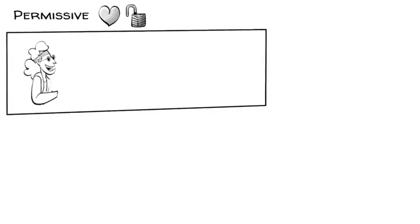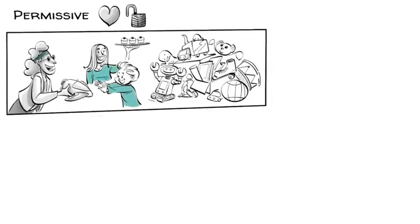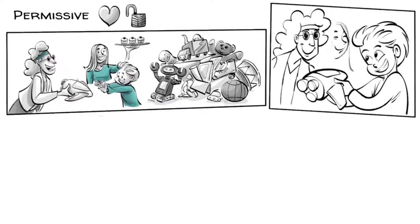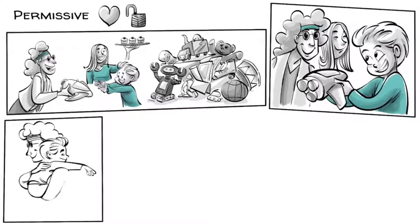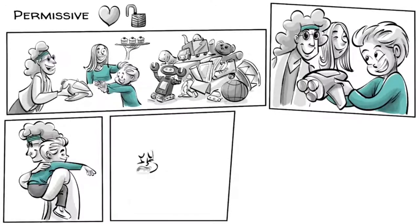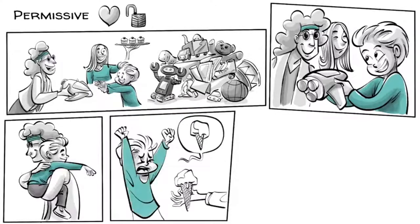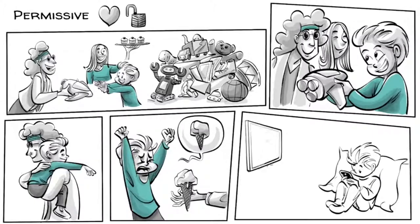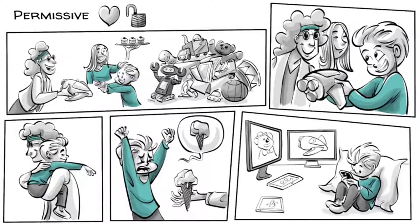Permissive parents like those of Peter enjoy their little boy so much that they believe they should fulfill all his wishes, give him full freedom and never say no. Peter enjoys full control over his parents and gets whatever he wants. If he doesn't want to walk, he'll be carried. If he wants ice cream, ice cream he gets. If he wants to play games, he'll be playing them all night.